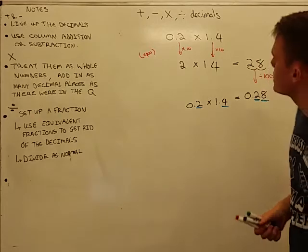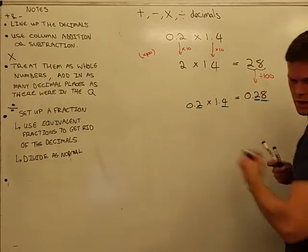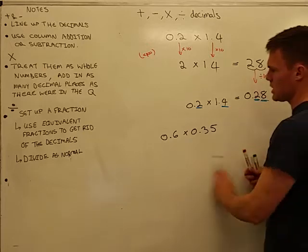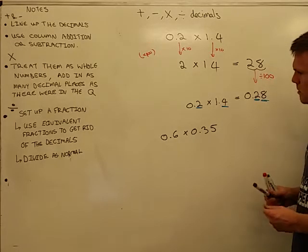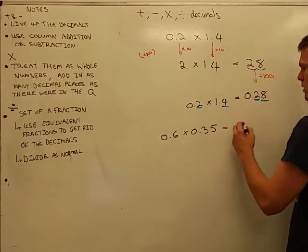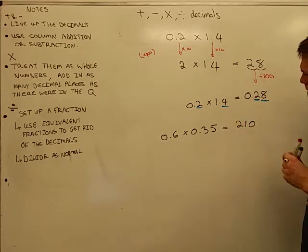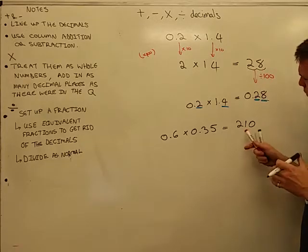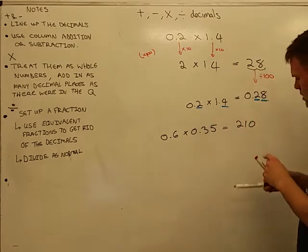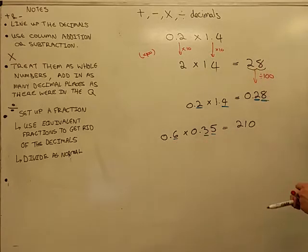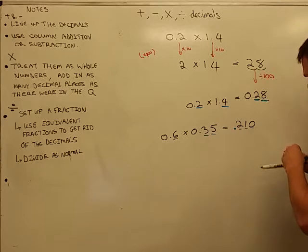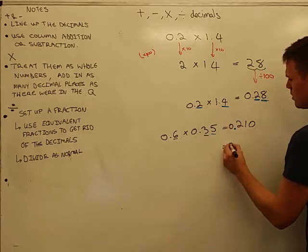So 0.28 is the answer to 0.2 times 1.4. But here's something that I find very curious. If we count the number of decimals in the question, or the decimal places at least, it's the same in that side as well. So let's see if we can do that with another problem. Let's have 0.6 times 0.35. Now I could do 6 times 35, and it won't take me a bit of time. But if I just pretended 6 times 35, and 6 times 35 is 6 times 5 times 7, which would mean 210. That obviously isn't the answer to 0.6 times 0.35.